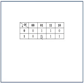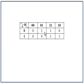Let's consider this KMAP — it's all filled and our goal is to derive the Boolean expression from it. Remember the rules: we have to find the largest grouping, and the grouping has to be a power of 2. In this case, the largest group we have is a group of 2.